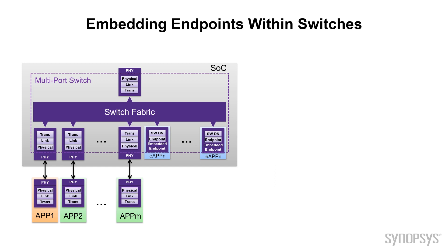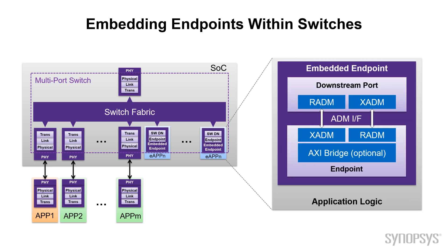Then on the right-hand side of the same diagram, you see the embedded endpoints — these two blocks with the blue showing the embedded applications. What we've done here is essentially eliminated the need for this external PHY and this external application, and pulled it right inside the SOC. What we've really done is streamlined things quite a bit. Not only have we removed the PHYs, but we've removed a lot of the other logic that's not required in order to get your application talking to the host. We've compressed the downstream switch port together with an endpoint and created what we're calling an embedded endpoint.